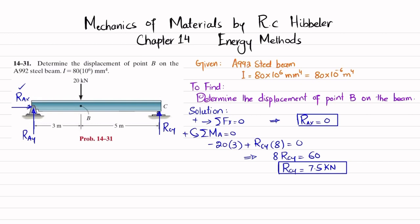Using the third equilibrium equation, sum of all forces in the y-direction equals zero, with upward forces positive: R_Ay − 20 + 7.5 = 0, giving R_Ay = 12.5 kN.